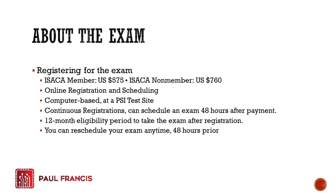About the exam: ISACA members pay $575 and non-members pay $760, just for one attempt. From time to time ISACA gives a $50 discount, so watch out for that. They now offer continuous registration, so you can schedule anytime and take the exam 48 hours after payment. It's online registration and scheduling.